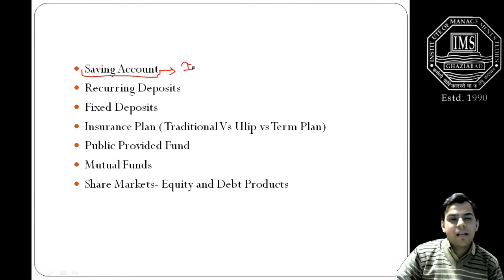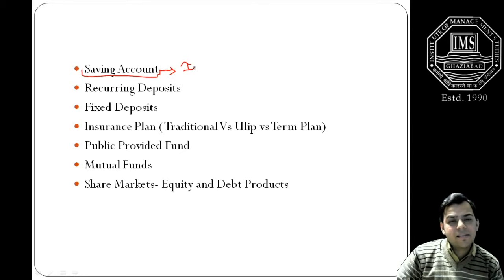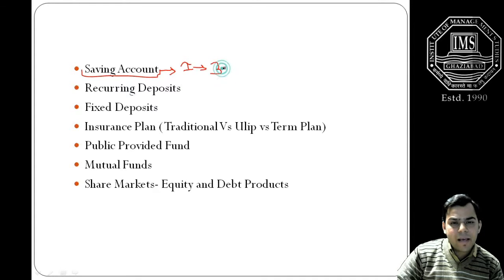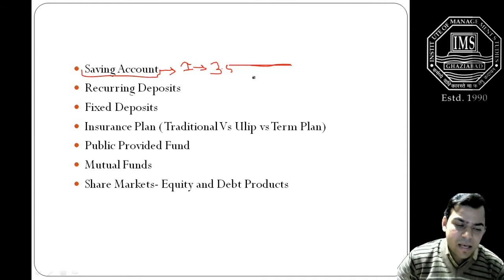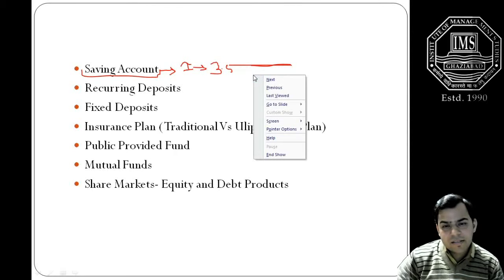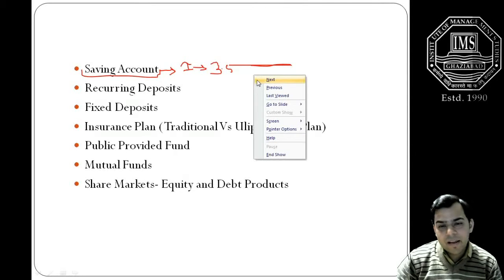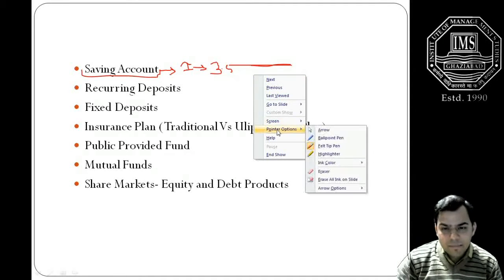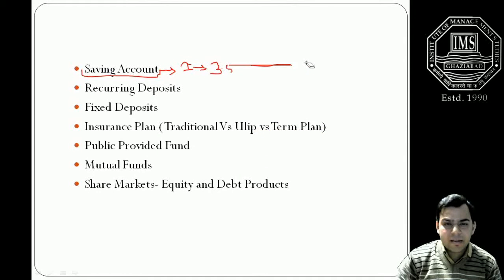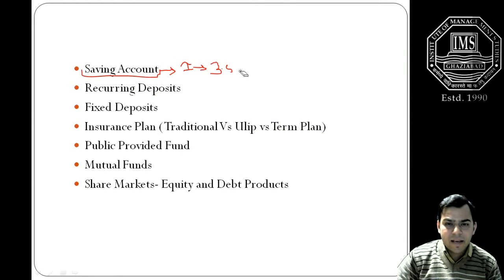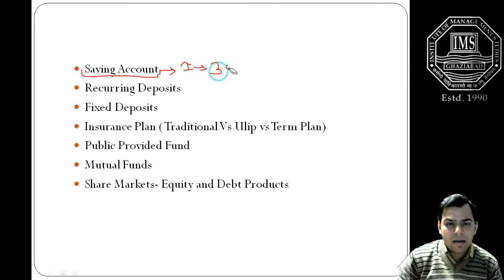For example, nowadays State Bank of India pays approximately 3.5% as the interest rate on the saving deposits. These interest rates are on the lesser side, but at the same time we can say at least you have done something as far as your investments are concerned and you have started and became part of the formal channel.